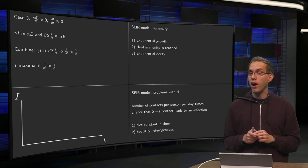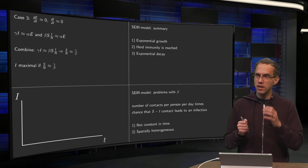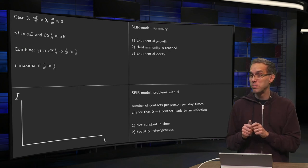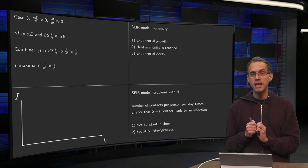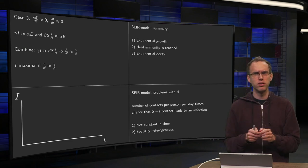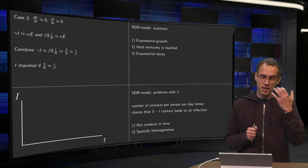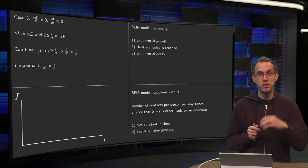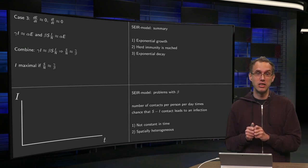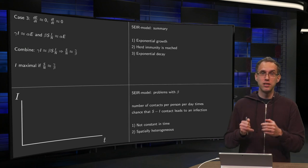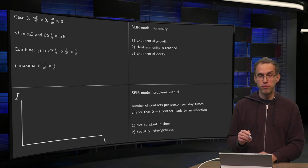Now sounds easy enough. So are there any problems with it? Well, yes, because remember our parameter beta we assumed constant alpha and gamma. That is more or less fine because they are related to incubation periods, period duration of infection. Can't do too much about that. But your parameter beta again is important. It gives the number of contacts per person per day, times the chance that such a contact leads to an infection. So what's the problem with this beta? We put it to a constant, but first of all, it's not constant in time.